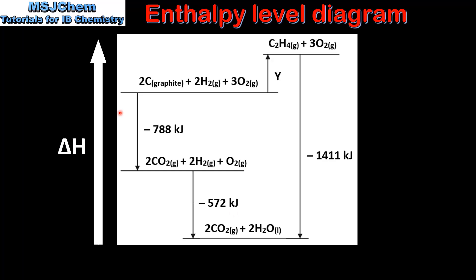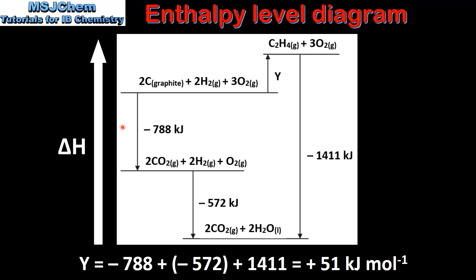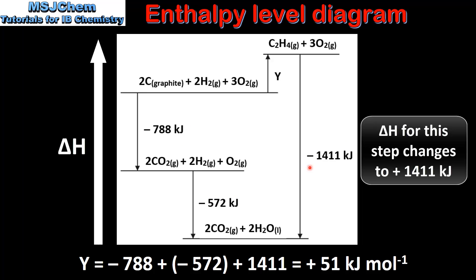According to Hess's law the enthalpy change for a reaction is independent of the route that is taken. So to calculate the enthalpy change for step Y we can add together the enthalpy changes for these three steps. Note that because we are going against this arrow we need to reverse the sign of the enthalpy change. So the enthalpy change for step Y equals negative 788 plus negative 572 plus 1411, which gives us positive 51 kilojoules per mole. This is the enthalpy change of formation value for ethene.